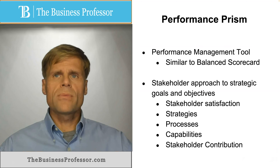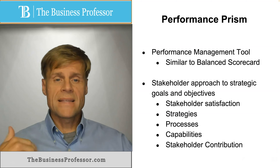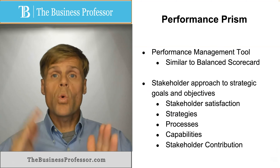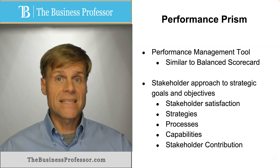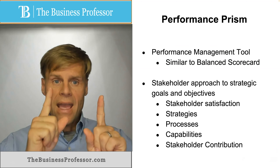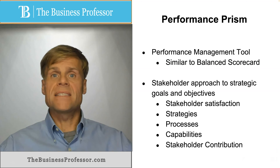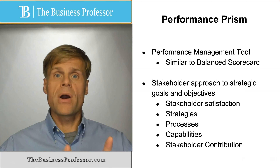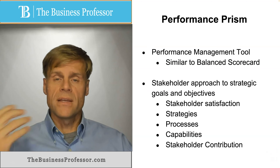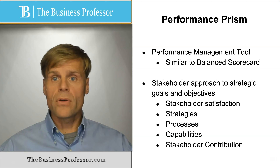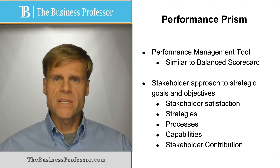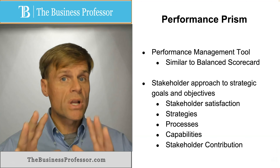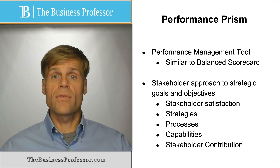In summary, the performance prism is very similar to the balanced scorecard. It assigns quantifiable metrics to the various processes within the organization and evaluates the extent to which these processes accomplish the objectives and goals of the firm, but with a view towards stakeholder satisfaction and stakeholder contribution to this overall effort.